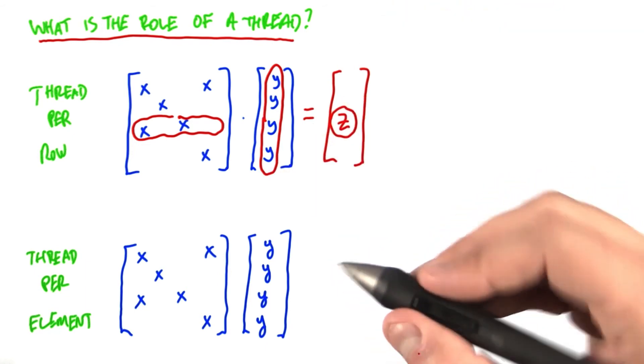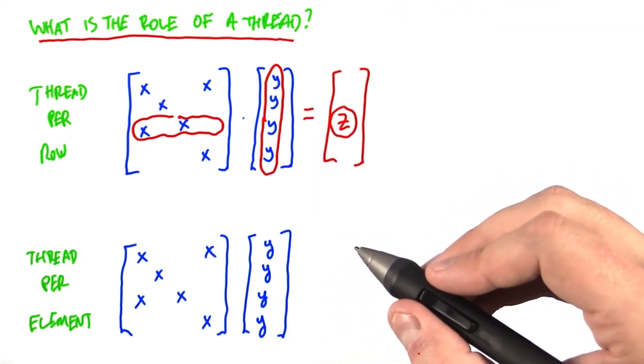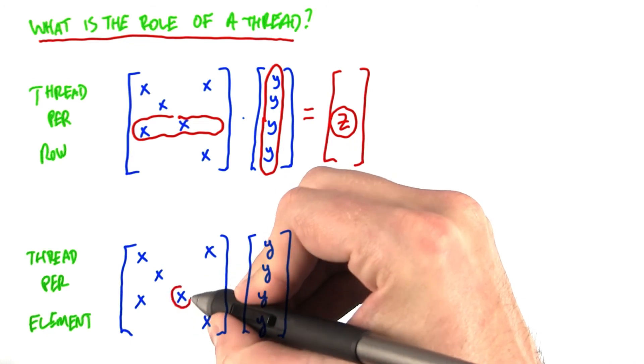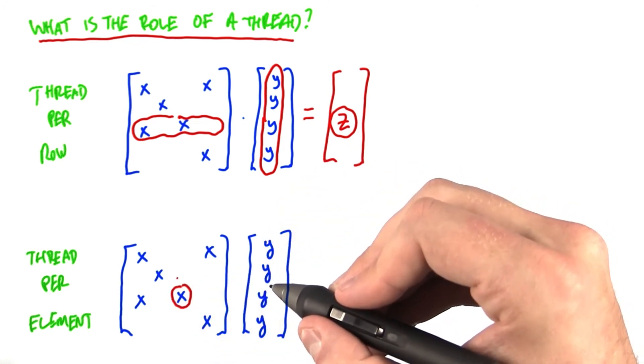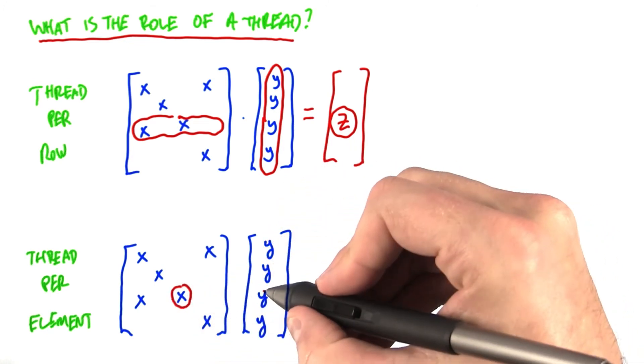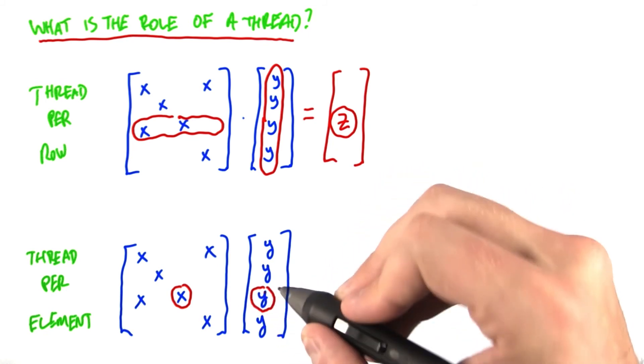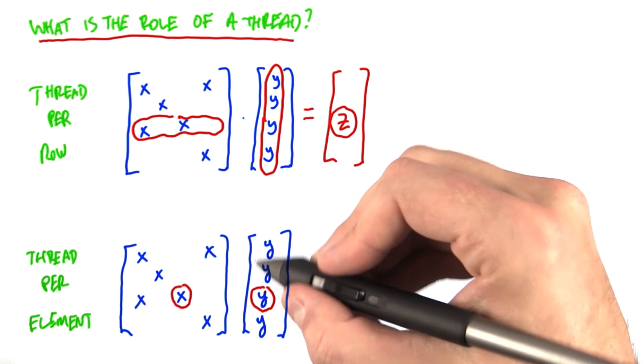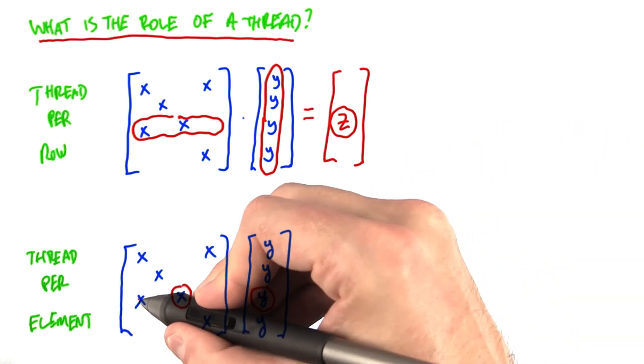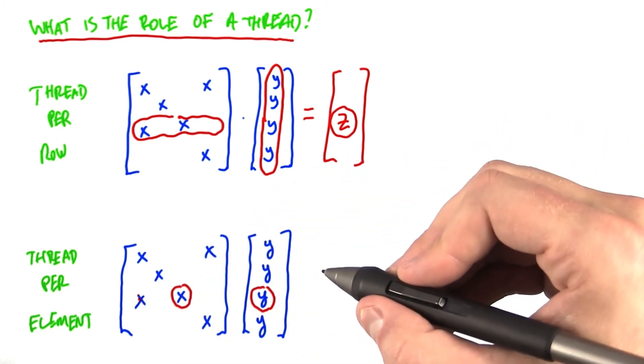Second, we will assign one thread per element in the sparse matrix. For instance, this element here. Here, a thread is responsible for doing one multiplication, in this case, times its corresponding element in the input vector, what we call a partial product, and then cooperating with other threads, this thread for instance, in summing up the partial products.